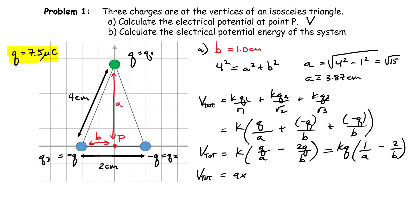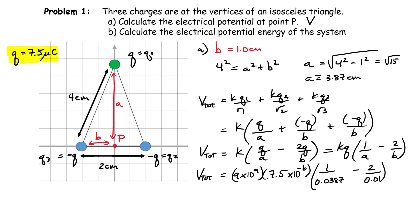Putting everything into the calculator carefully with all the exponents, I get approximately minus 11.76 times 10 to the 6 volts. You can convert that to megavolts if you want — that's a lot of voltage! And that is the value for the electrical potential at point P.